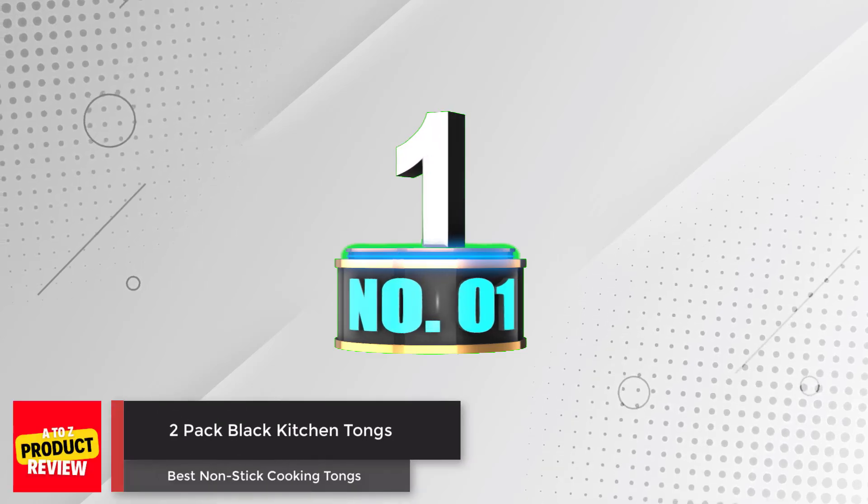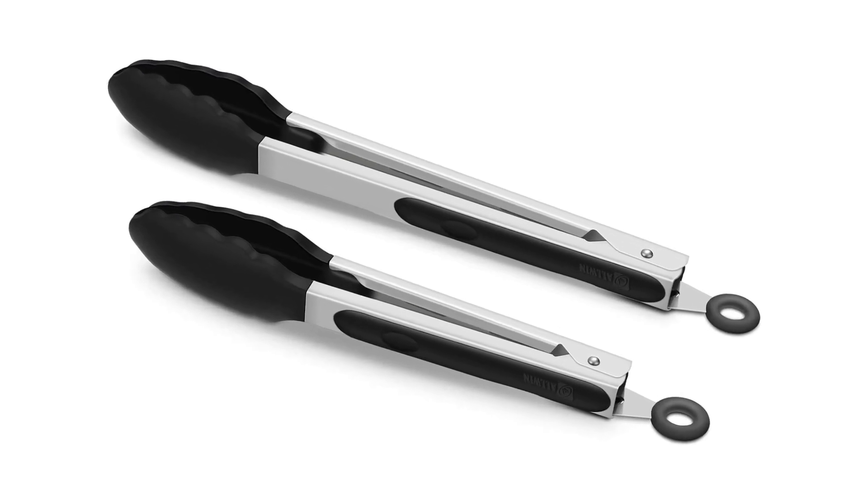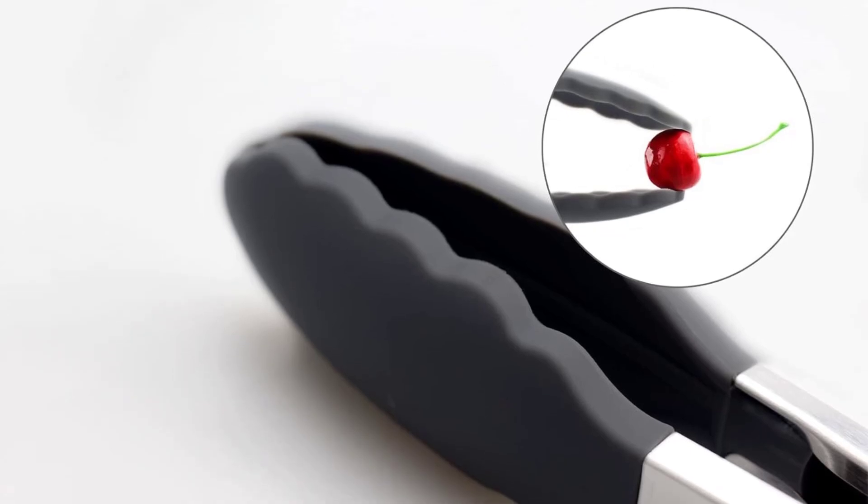Number one: 2-Pack Black Kitchen Tongs. These cooking tongs are heat-resistant up to 500 degrees Fahrenheit and made of high-quality, non-stick, corrosion and odor-resistant materials.